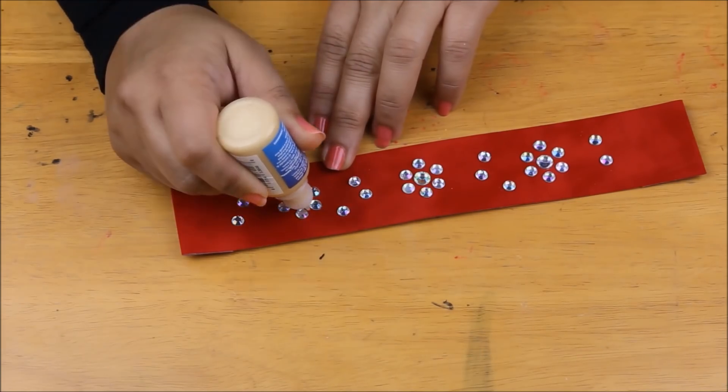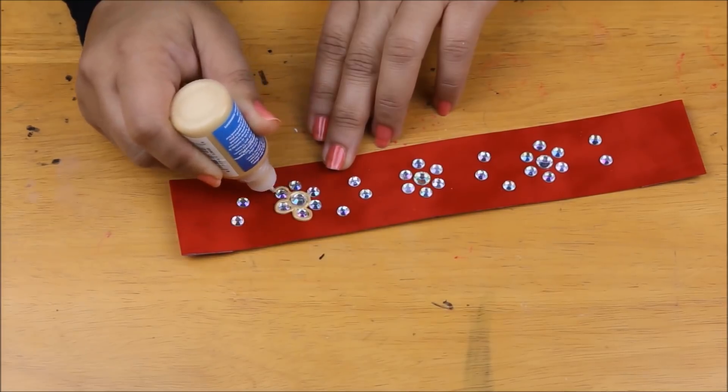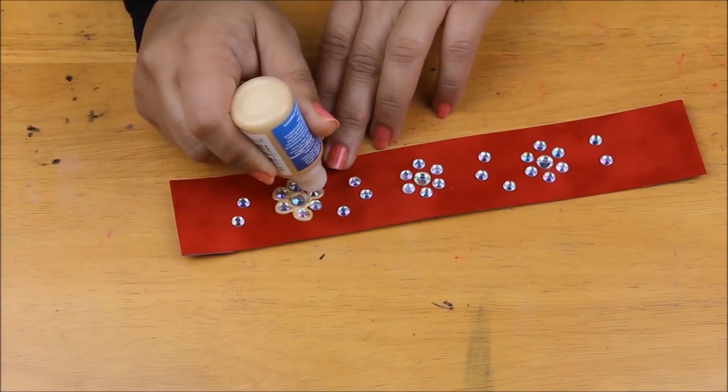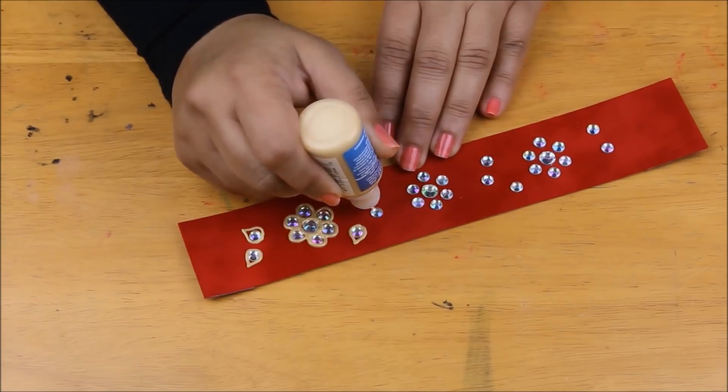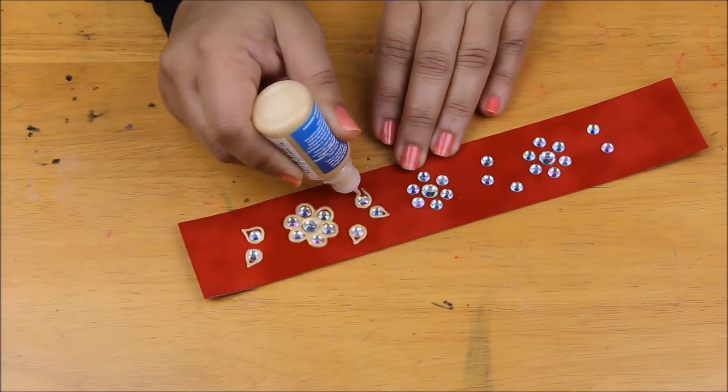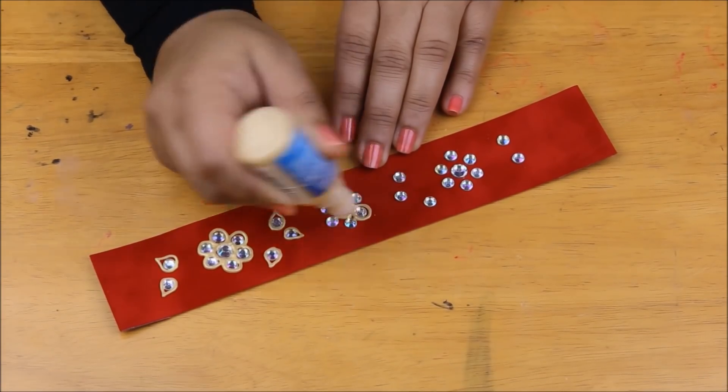Next, with my 3D gold paint, I'm going to go around these rhinestones just like you draw henna with a henna cone. Exactly like that, I'm going to go around these rhinestones and I'm going to follow a similar design that's in the choker that Deepika Padukone is wearing.